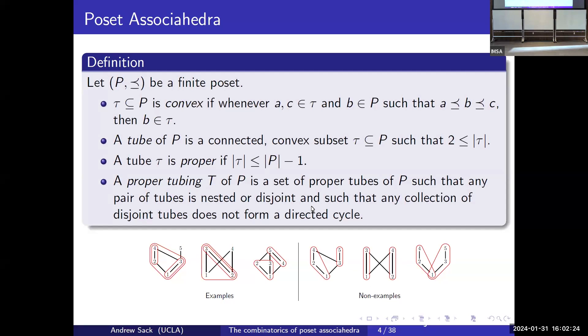A tube is a proper, connected, convex subset of P. A proper tubing is a set of proper tubes such that any pair of tubes is nested or disjoint, and any collection of disjoint tubes does not form a directed cycle. Here I have some examples of proper tubings and some non-examples. You can see this one, we have the set 1, 2, 4 is not convex. Here we have a directed cycle between 1, 3 and 2, 4. And here these sets are not disjoint but are also not nested.